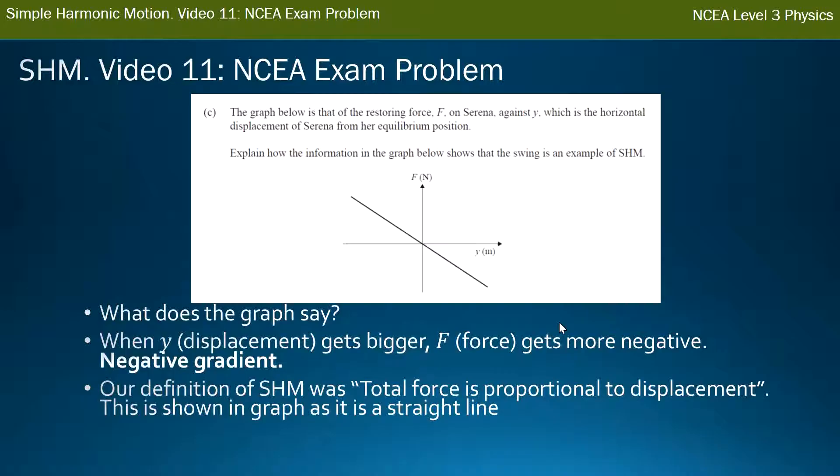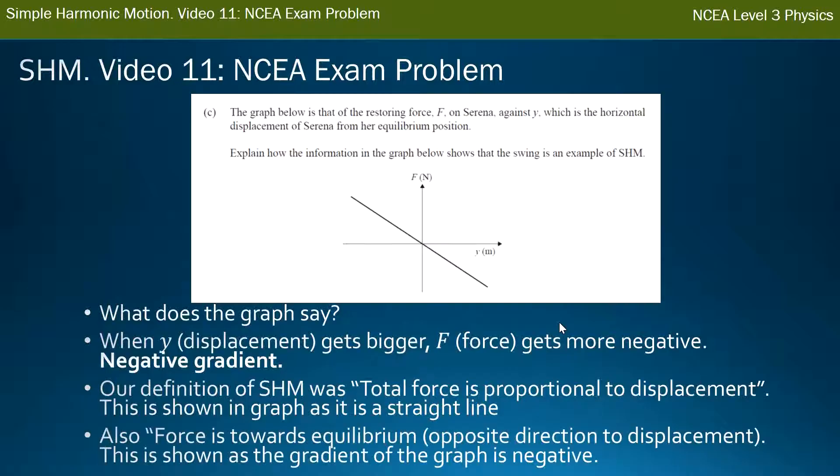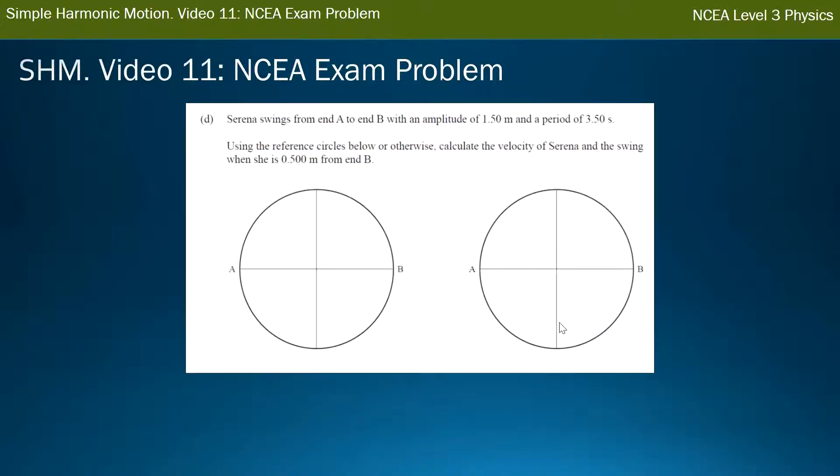So then how does that tie into my definition of simple harmonic motion? So our definition back in, I think, about video two for simple harmonic motion was that the total force is proportional to the displacement. So that means as the displacement gets bigger, the force gets bigger. And this is what's happening in this graph. Even though one of them gets negative, that's still getting, the value of it's getting larger. So this is showing that our graph is a straight line. When displacement gets bigger, force gets bigger, shown with a straight line graph. The second part of our definition was that the force is towards the equilibrium, which is the opposite direction of the displacement. As the swing moves away from the equilibrium, the force is back towards the equilibrium. And this is showing that the gradient of our graph is negative. So we've looked at the two parts of our definition of simple harmonic motion, and explained both of them. One in that the graph has got a straight line, the gradient's straight, or the gradient's constant, sorry. And the second is that the gradient is negative. So that one would have been a merit question. And this last one's an excellence question.